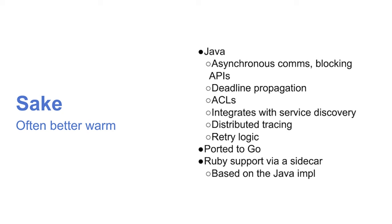We started building Sake for Java and quickly ported it to Go. Ruby support is also there, though not as mature — most of the Ruby functionality is achieved via a sidecar process: a separate Java process that runs on the same server as the Ruby server, with the Ruby server talking to the Java implementation.